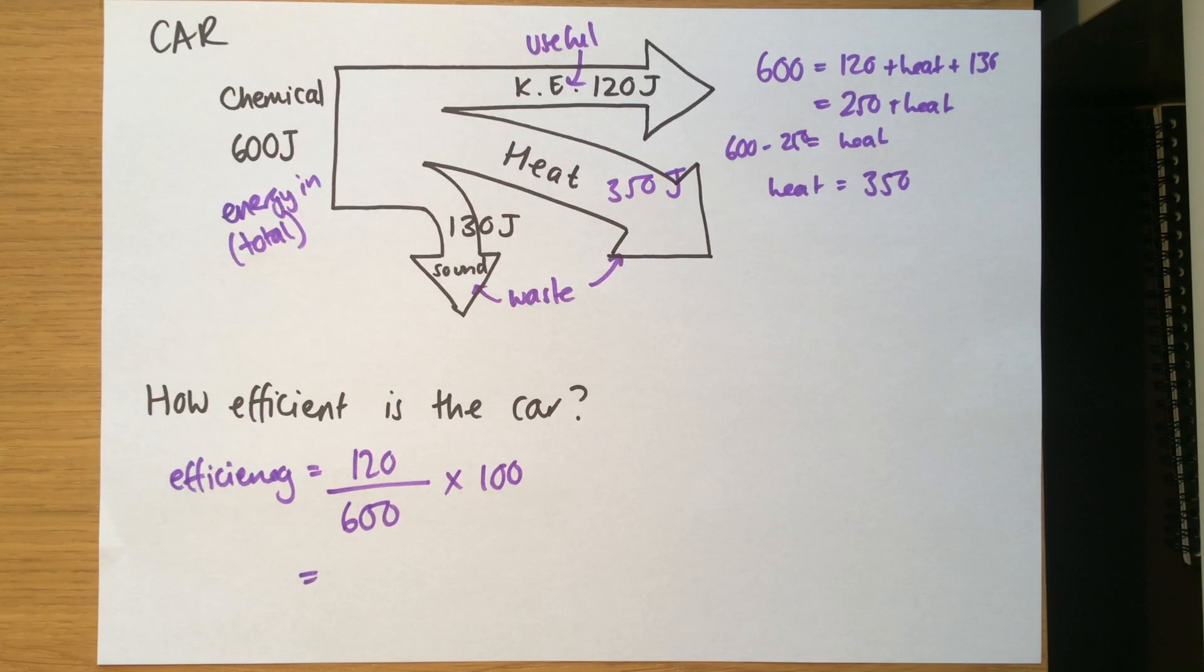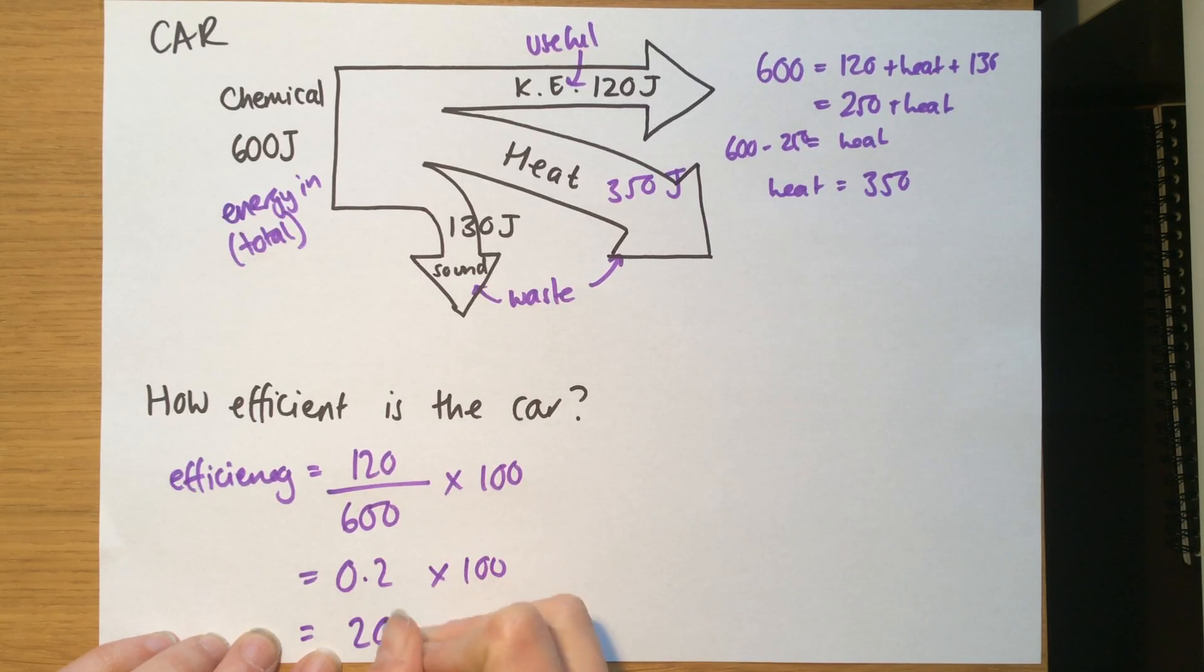Now this is another one that I should be able to do in my head but I've forgotten, so I'm going to quickly do it on a calculator. 120 divided by 600 gives me 0.2 times 100, and that is going to be the same as 20 percent. So this car is 20 percent efficient. It wastes 80 percent of its energy.